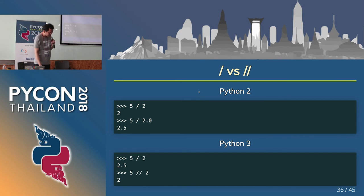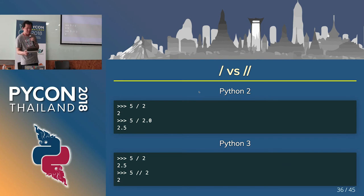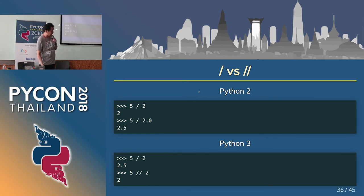Forward slash versus double slash. I think this change was a good thing, because division is not closed in the set of integers in the math world. The double slash is closed in the set of integers. I think it's easier to understand, so use the double slash — the bottom syntax.